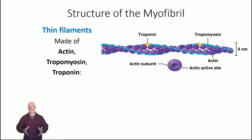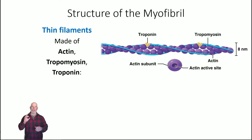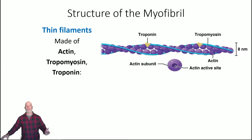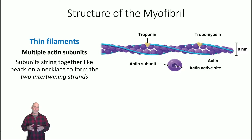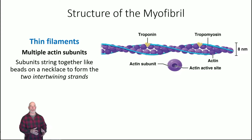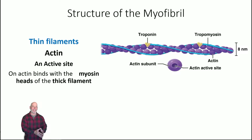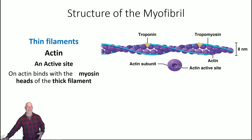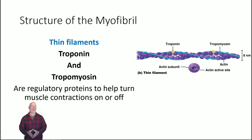Thin filaments are made up of actin — the same actin you have as part of your cytoskeleton. Actin subunits string together like beads on a necklace to form long intertwining strands that are very strong. The thin filament is composed of actin, tropomyosin, and troponin. Each actin subunit also has an active site, and that's where the myosin heads are going to bind to the actin, allowing sliding and movement.